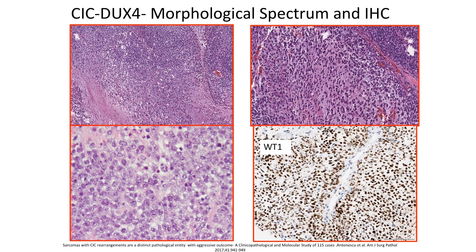This is the histology and morphological spectrum of CIC-DUX4 sarcoma. The tumors with spindle morphology have a starry sky pattern and they can be strongly positive for WT1. Compared to Ewing sarcoma, these tumors have a poor survival.